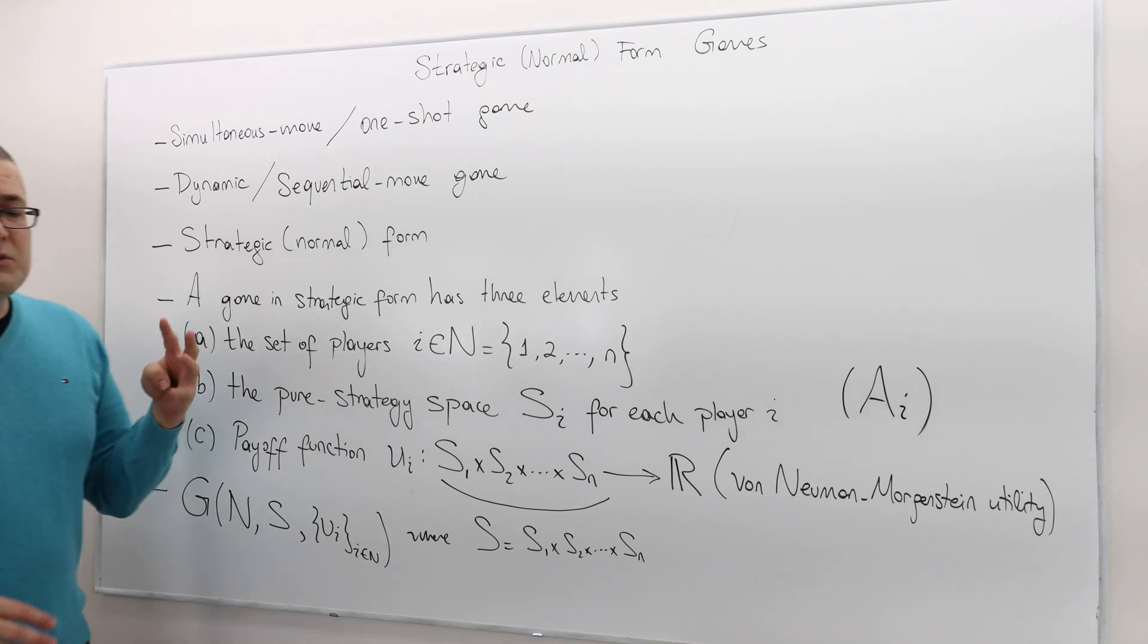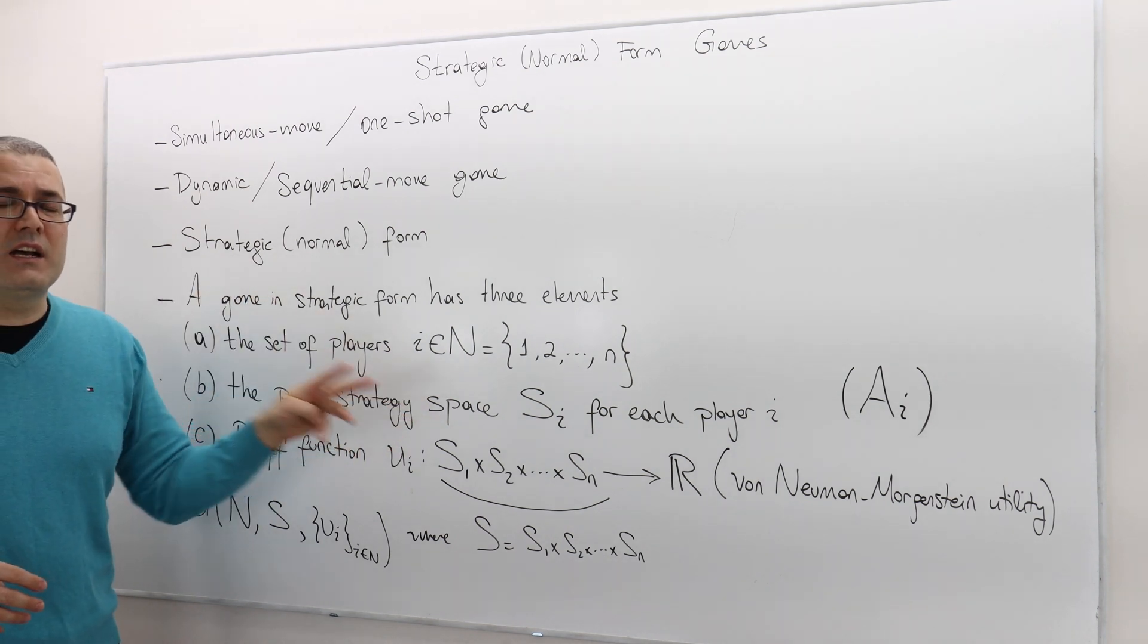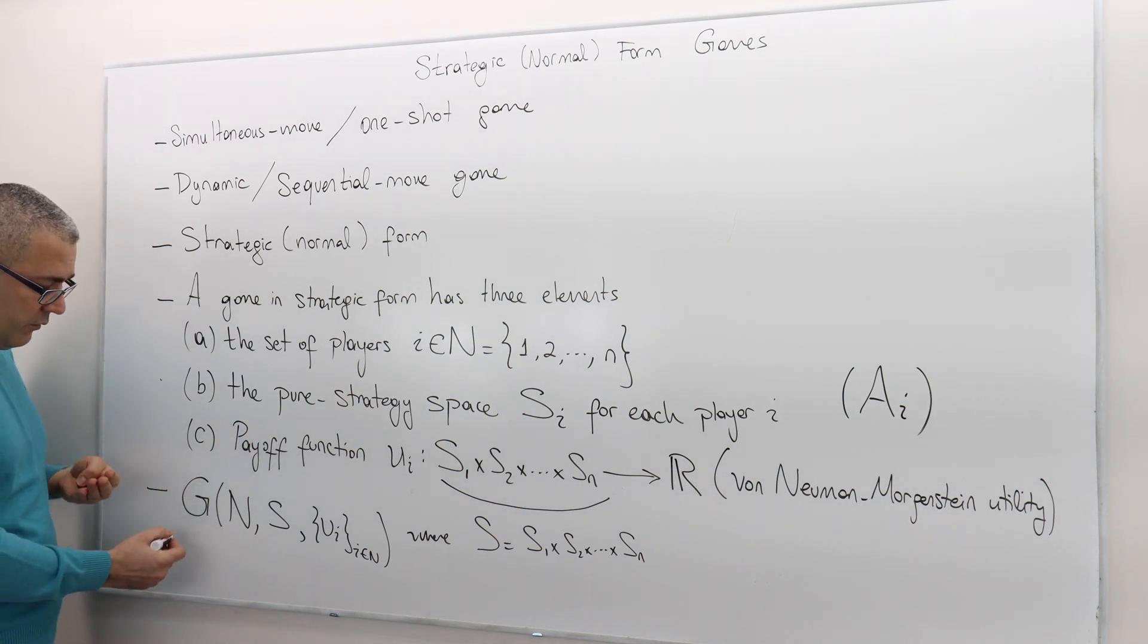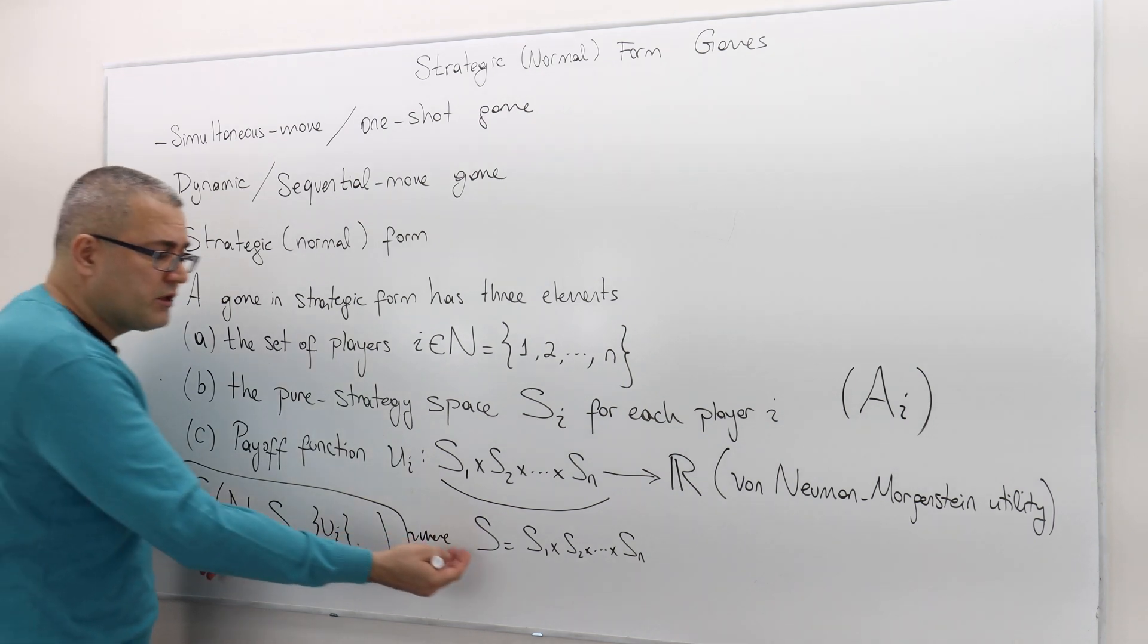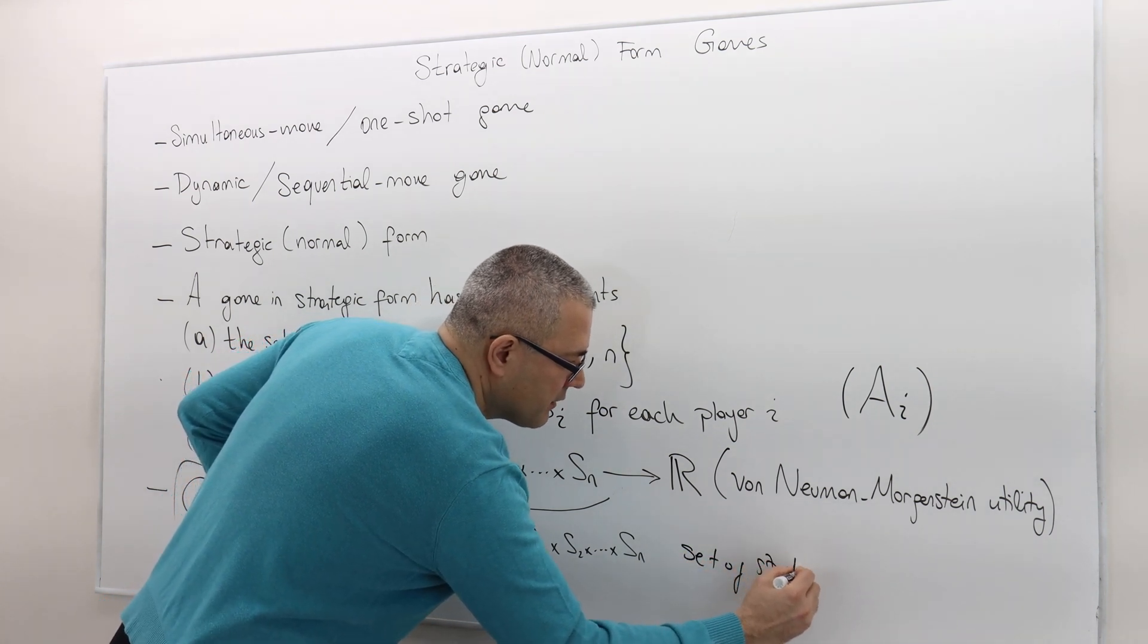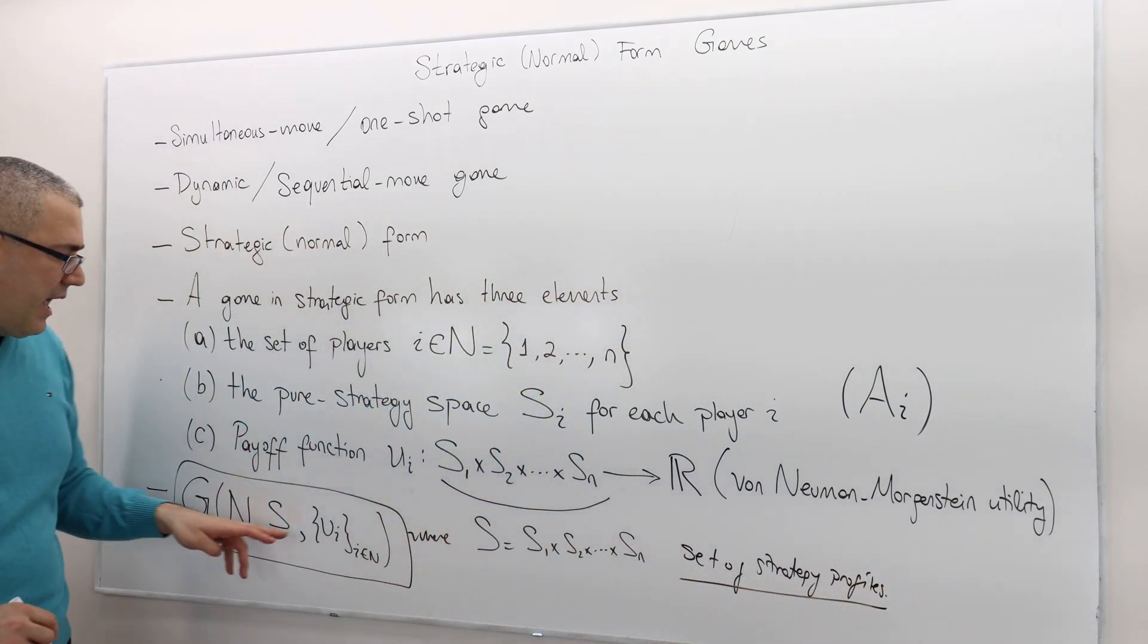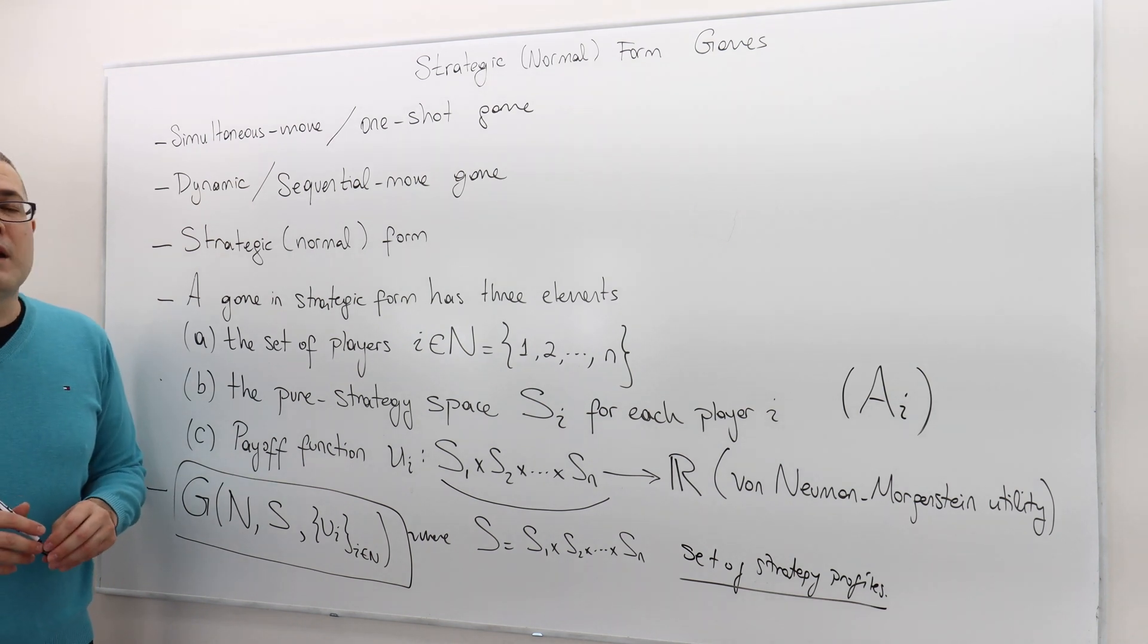So that's it. Those three main ingredients constitute a normal form representation of a game, set of players, set of strategies, and a payoff function for each player. So if we need to summarize a game, we use this notation G in a parentheses, N, which denotes the set of players, S, which basically denotes the set of strategy profiles, and then the payoff function for each player. So that constitutes the normal form representation of a game.